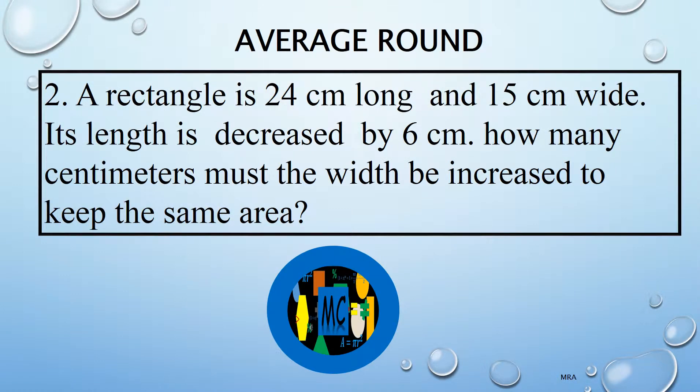A rectangle is 24 cm long and 15 cm wide. Its length is decreased by 6 cm. How many cm must the width be increased to keep the same area?